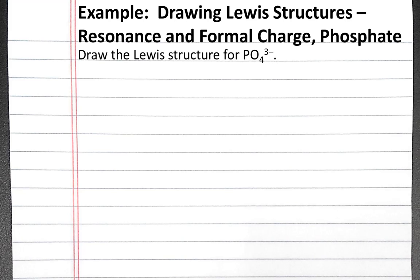In this example problem, we'll draw the Lewis structure for phosphate. The first step is to sum the valence electrons.